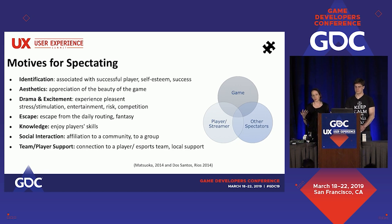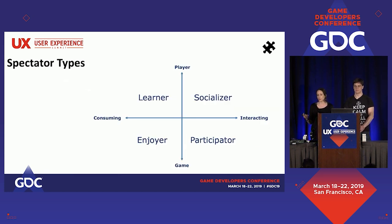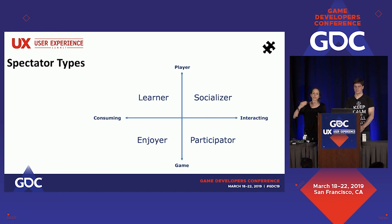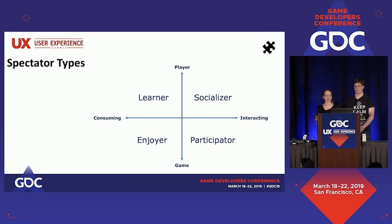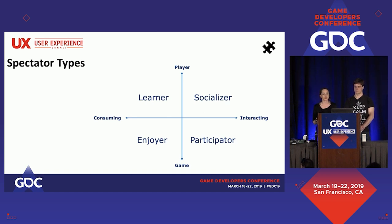Similar to player types, which all of you might know, there are also different types of spectators. This is a simple model we built where the player and the game are main interest points for spectators, but other spectators can be interest points too. Some people really want to interact, while others want to consume. Those who want to interact with the player or other spectators are socializers. Those who want to consume and learn from a player's skills can be learners. Those who want to impact the game can be participators. And those who are just enjoying the beauty of the game are consumers. Based on that, in literature we find nine different personas.